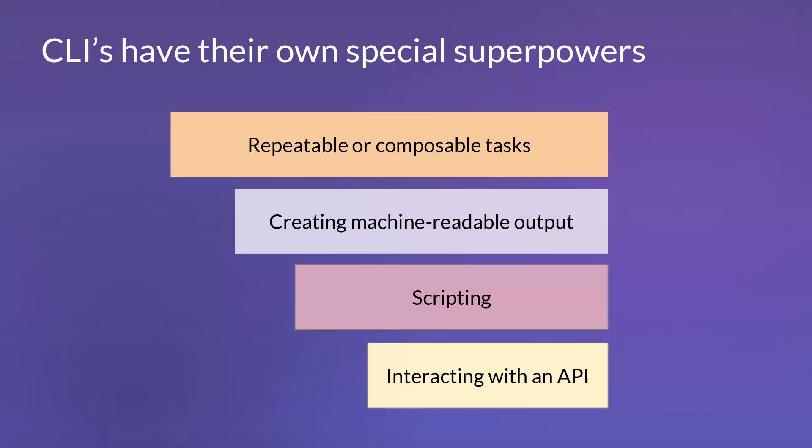Why is our CLI so widely used, and why build a CLI at all? CLIs have a lot of special superpowers. They enable developers to work really, really quickly. Once developers have that muscle memory of using our CLI, they love it and are able to do things really fast — it's a huge tool for power users. CLIs also support repeatable tasks, composeable tasks, machine-readable outputs, scripting, and — very importantly — interacting with an API.